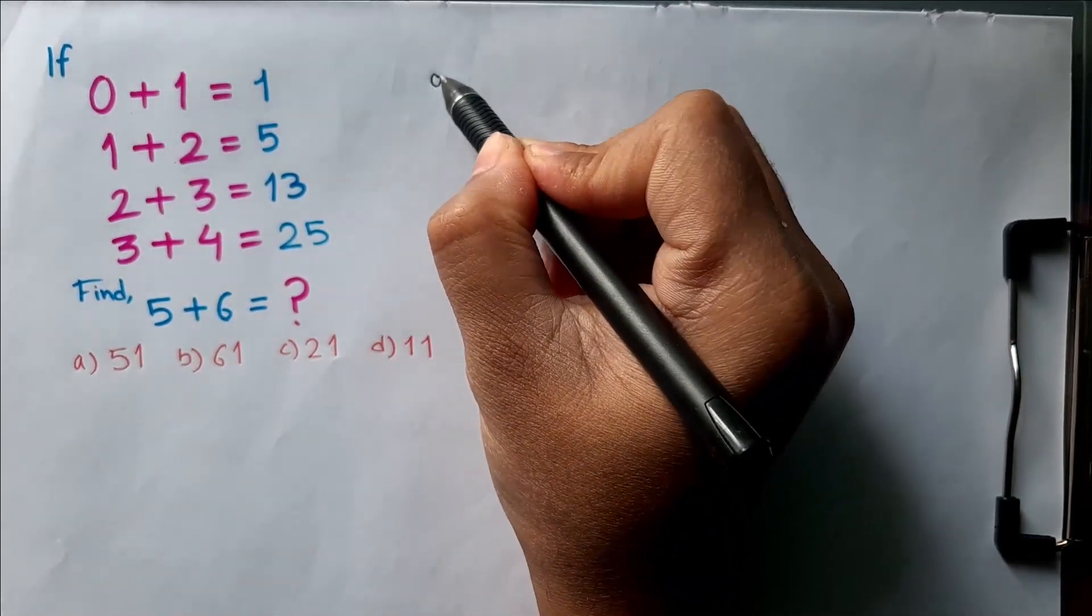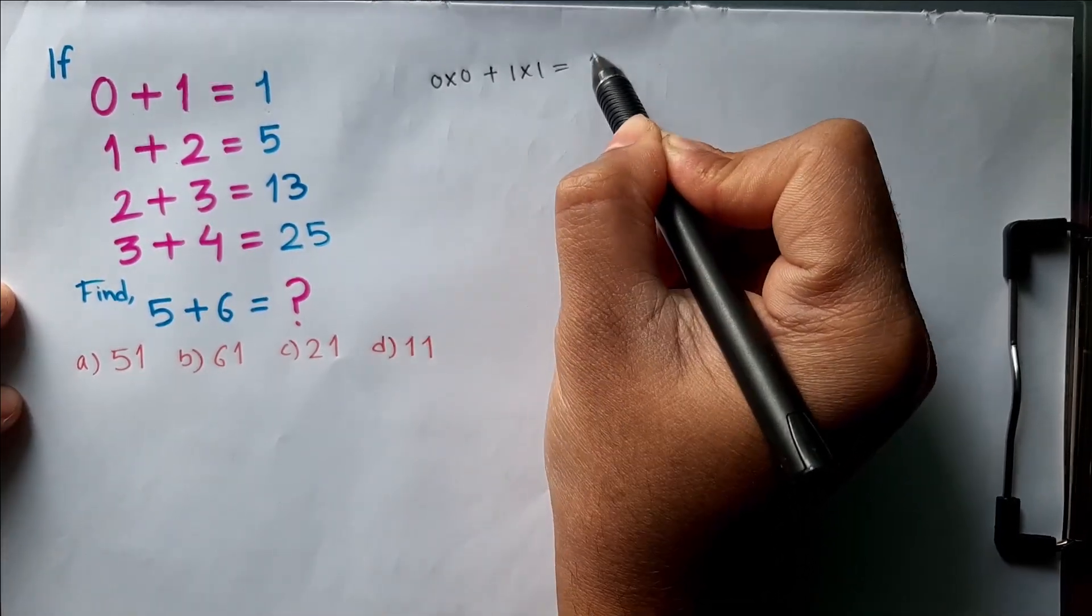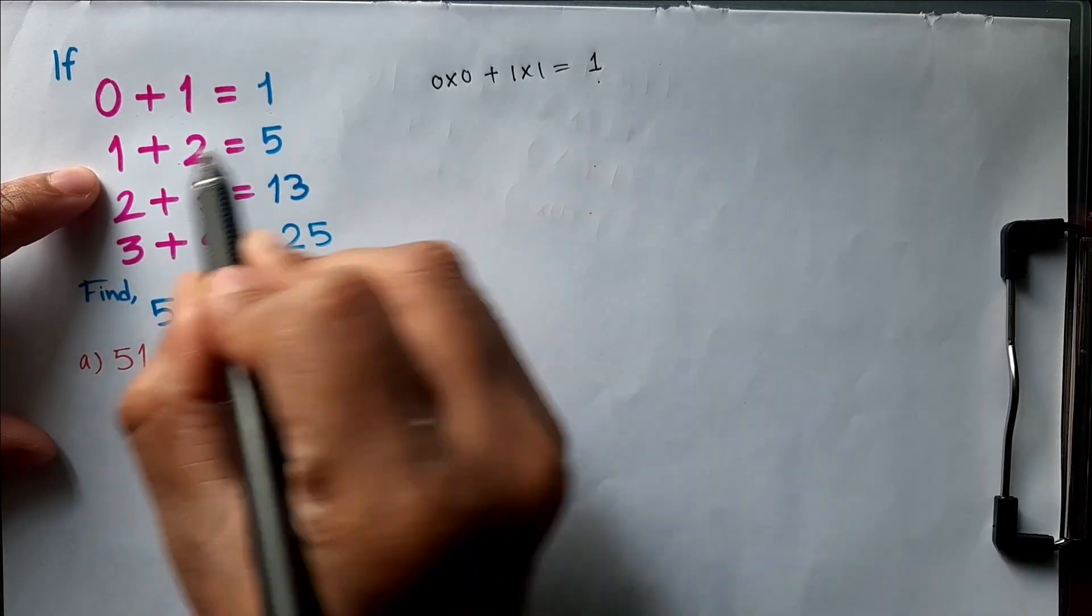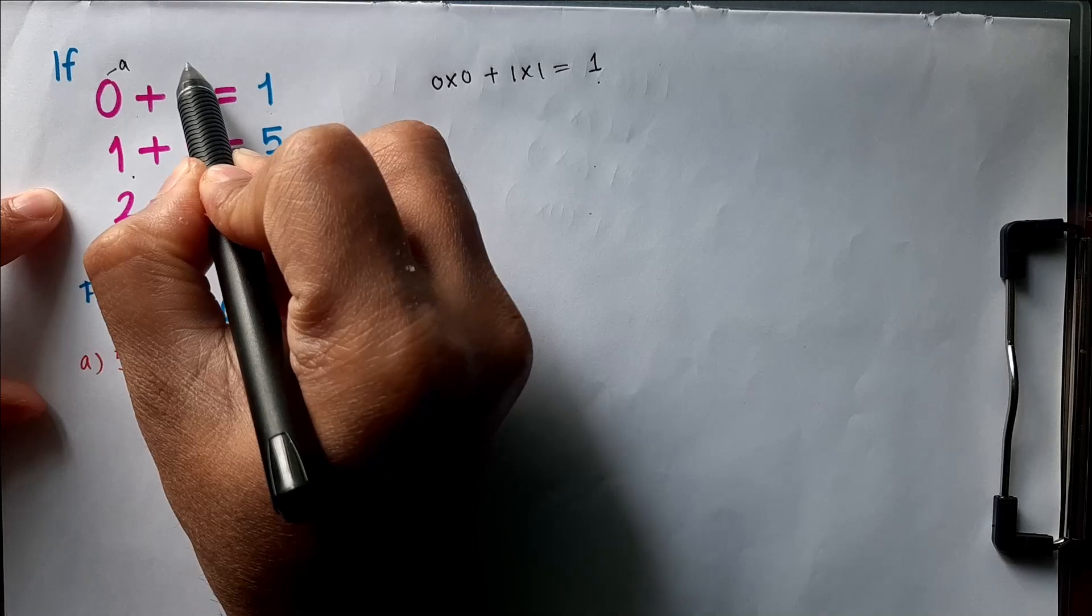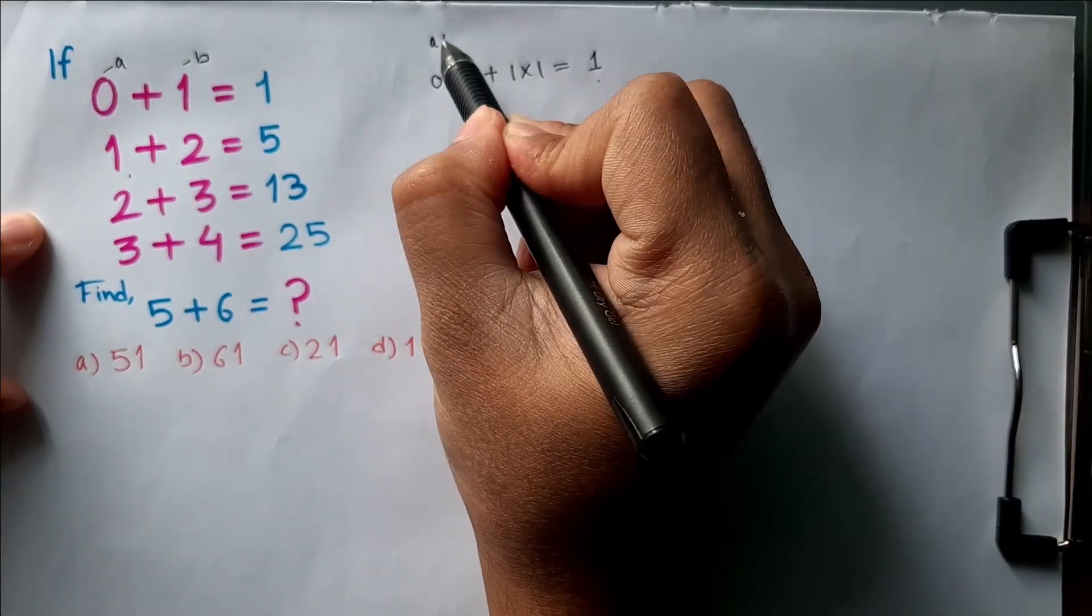So our logic is 0 × 0 + 1 × 1, we will get 1. Okay, similarly if you apply this logic here, let's write the formula first. This is a and this is b. So the logic is a